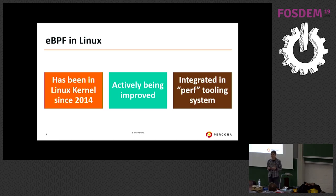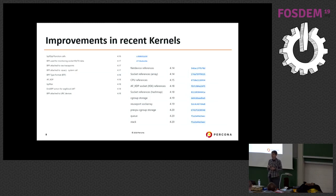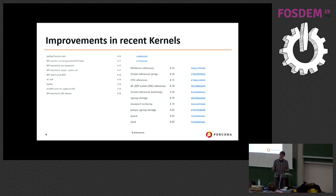eBPF in Linux was first introduced in 2014, so it has been around for quite a while, but it has been very actively improved. In recent years it's also been integrated into a wonderful framework for interactive performance analysis in Linux. If you look at improvements in recent kernels, pretty much every major kernel release includes additional eBPF features — ranging from new instrumentation points to new data structure types and ways to process and aggregate events.